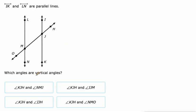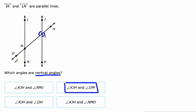First off, we're going to talk about vertical angles. Vertical angles are formed by two intersecting lines. They're congruent to each other and they're opposite of each other. So KJH is in every single one of these pairs. Let's find that. Here's KJH. The one that is vertical to that would be this one right here, IJM. So KJH and IJM — a pair of intersecting lines, OH and IK, they're opposite pairs.